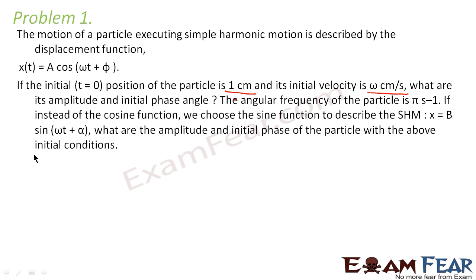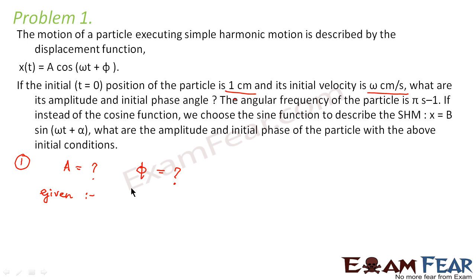Now let us deal with the first part of the question, which asks us to calculate amplitude A and the initial phase angle — that is the phase constant, the value of the phase at time t = 0. So we have to calculate A and φ. The problem says that the initial position of the particle is 1 cm, meaning x at t = 0 is 1 cm. Also, the initial velocity at t = 0 is ω cm per second.